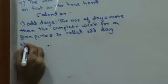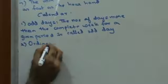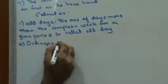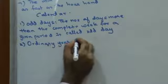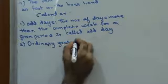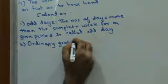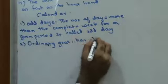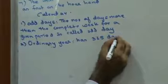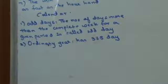Next, ordinary year. An ordinary year has 365 days. Remember that. An ordinary year cannot be a leap year.